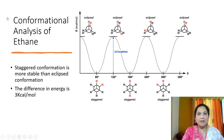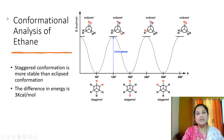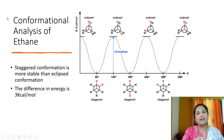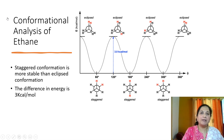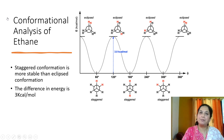The energy difference between these two confirmations is 3 kilocalories per mole, and one form can be easily converted into the other. With this, we conclude our discussion about confirmations of ethane. In the next video, we will see confirmations of butane.